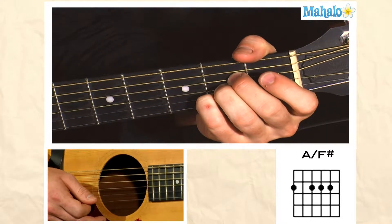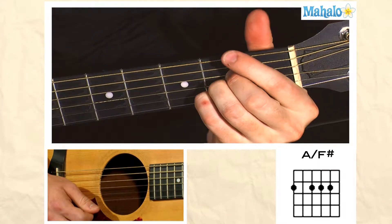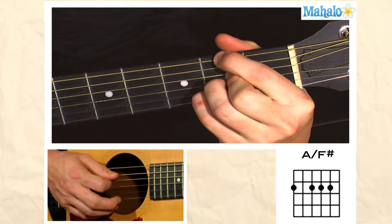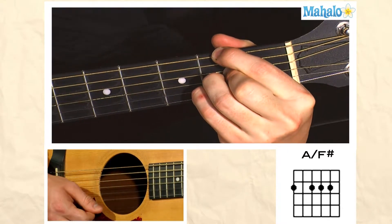I'm going to teach you the A over F sharp chord. So here's your A major, and then we're just going to add the second fret to make it an F sharp. This is our A over F sharp chord.